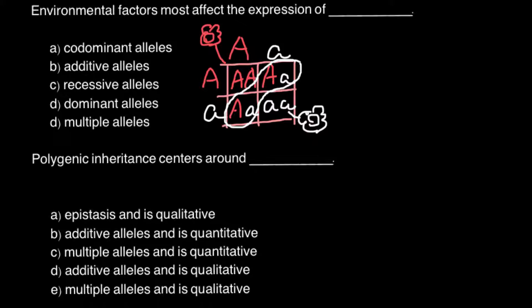The homozygous recessive would be a white-flowered plant and the homozygous dominant would be a red-flowered plant. With codominance, the flower would be patches of pure white and pure red — a mixture, but the colors wouldn't mix. So we can cross out this answer.